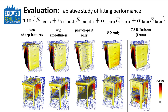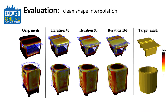Our ablation experiments confirm that all constraint terms are necessary to keep the high perceptual quality of the deformed mesh. Including the smoothness term is crucial to prevent surface self-intersections, while keeping sharpness allows ensuring consistency in parallel planes and edges. Finally, we demonstrate shape translation experiments, interpolating between the original mesh on the left and the target mesh on the right, discovering the potential of our framework and showing its performance on ideal shapes.